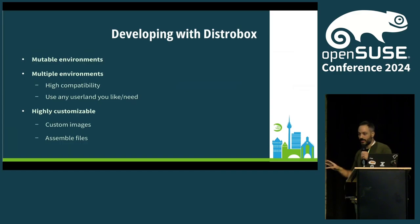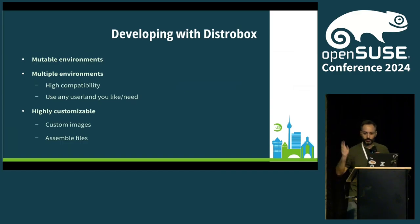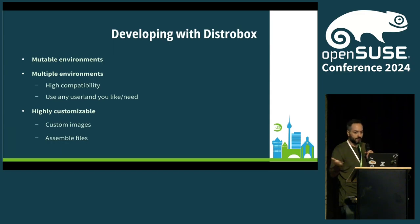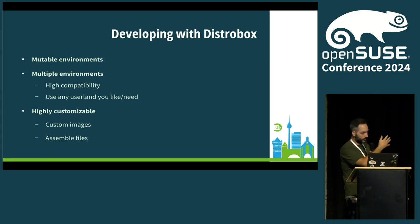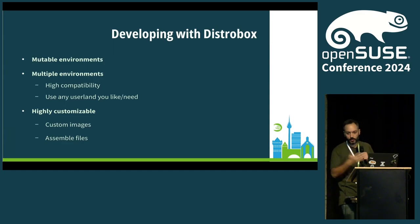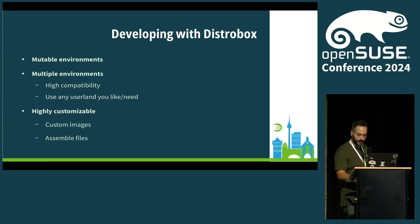So you have your immutable distribution — super reliable, super rolling and clean. But I need to work. I need to install stuff, SDKs, terminal applications, GUI applications. With DistroBox, we can have mutable environments. We can have multiple environments — diverse distributions or diverse snapshots. Maybe you want to test something on a Tumbleweed snapshot from a couple of weeks ago.